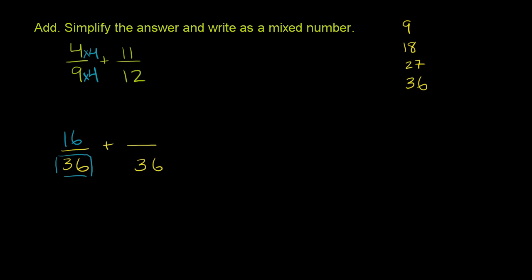Now we do the same thing over here. 36 is 12 times 3. So we're multiplying 12 by 3 to get 36. Well, if we did that to the denominator, we also have to do that to the numerator. So 11 times 3 is 33. And just like that, we've now rewritten each of the fractions so that they have the same denominator. Both of their denominators is 36.